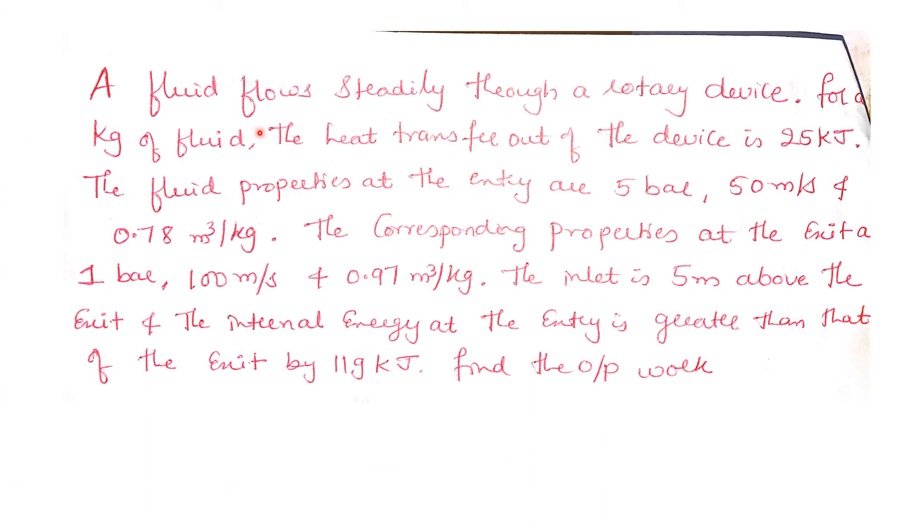Next problem: A fluid flows steadily through a rotary device at 25 kilojoules. The fluid properties at the entry are 5 bar, 50 m/s, and 0.78 m³/kg. The corresponding properties at the exit are 1 bar, 100 m/s, 0.97 m³/kg. The inlet is 5 meters above the exit, and the internal energy at the entry is greater than that of the exit by 119 kilojoules. Find the output work.